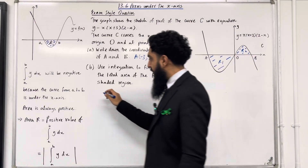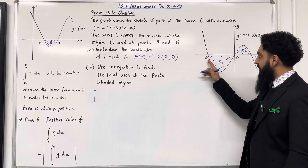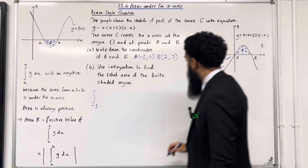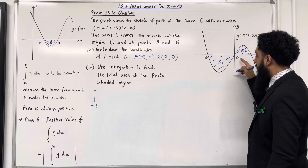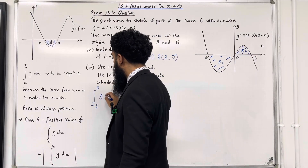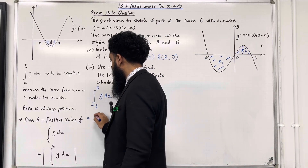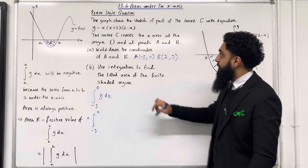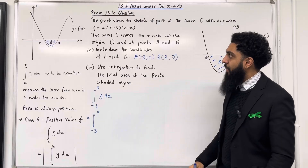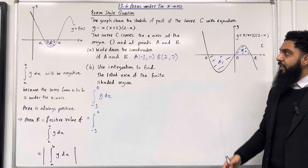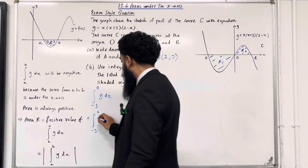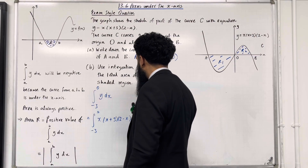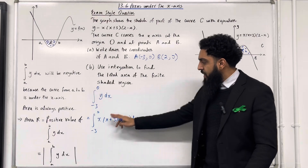Let's start off by working out the shaded area R1. We must take the integral from the lower limit, which is the x-coordinate of A, that is minus 3, to the upper limit, which is the x-coordinate of the origin, that is 0, of y dx. So, integral from minus 3 to 0, we are integrating y, which is precisely x multiplied by (x plus 3) multiplied by (2 minus x) dx. We cannot integrate this as yet — we need to expand the brackets.